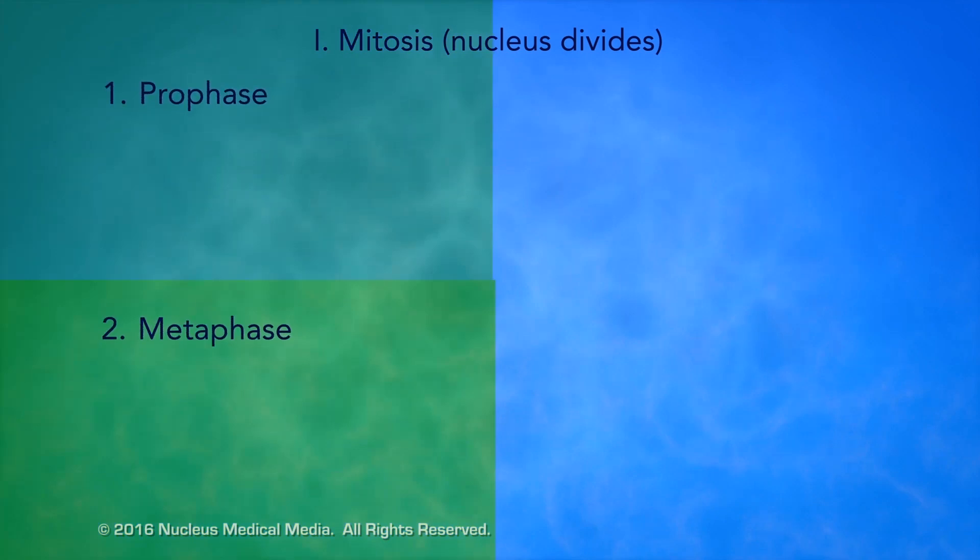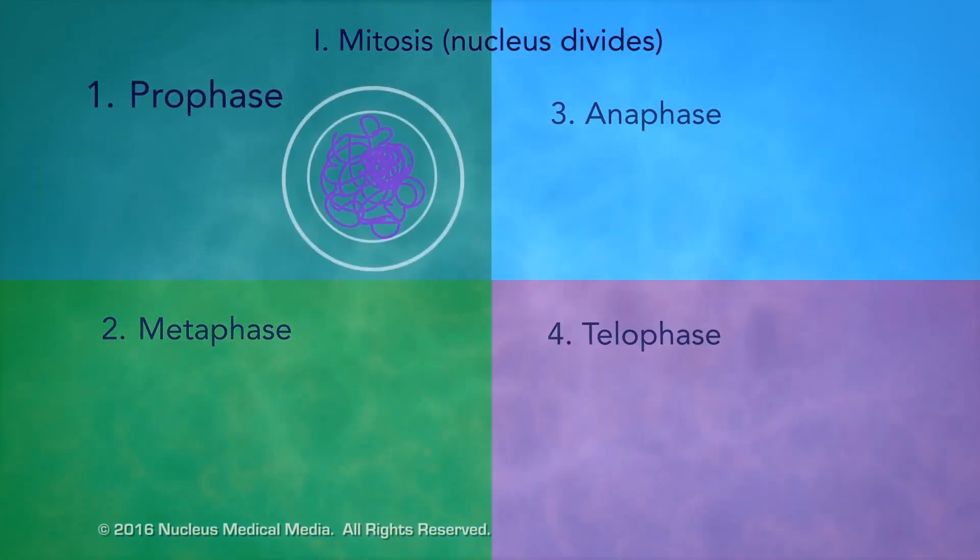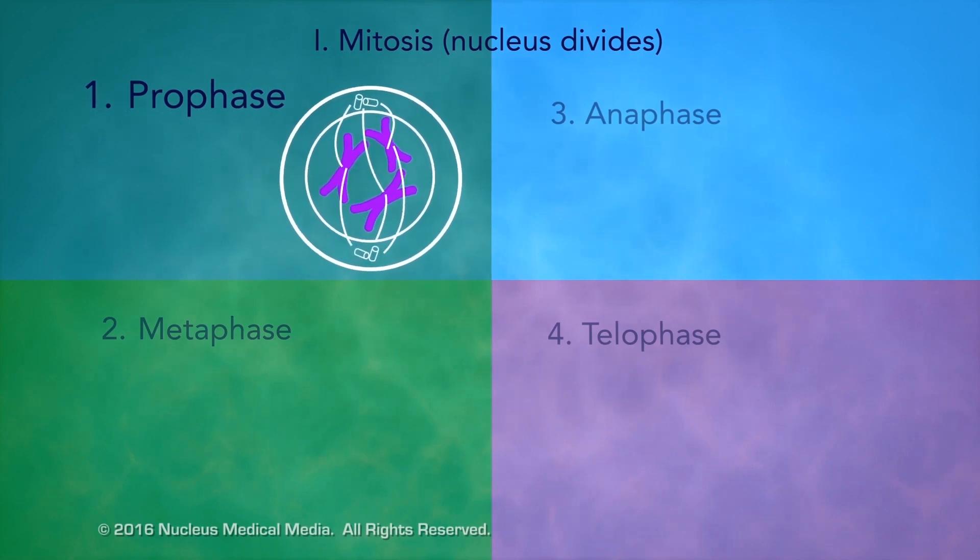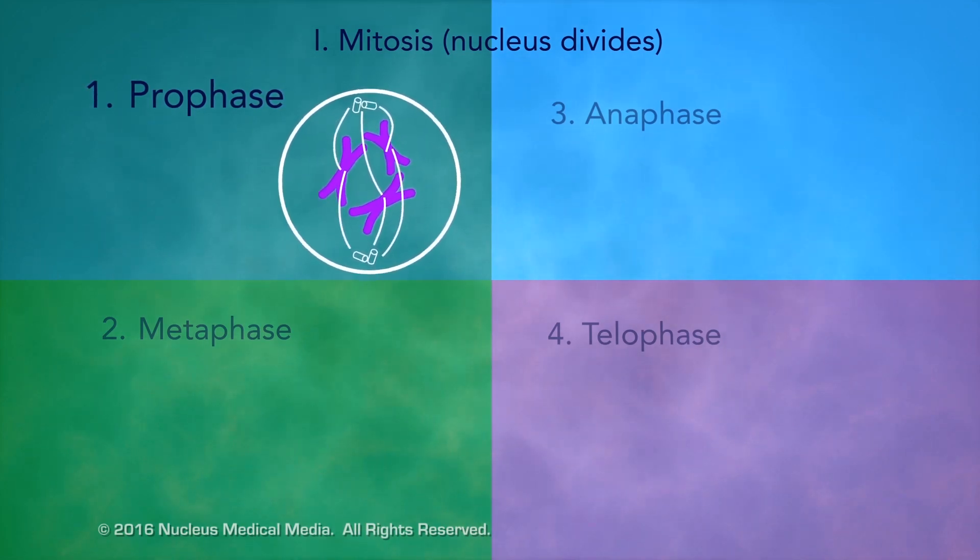Mitosis has four phases. During prophase, chromatin condenses into chromosomes. Spindle fibers form, and the nucleolus and nuclear membrane disappear.